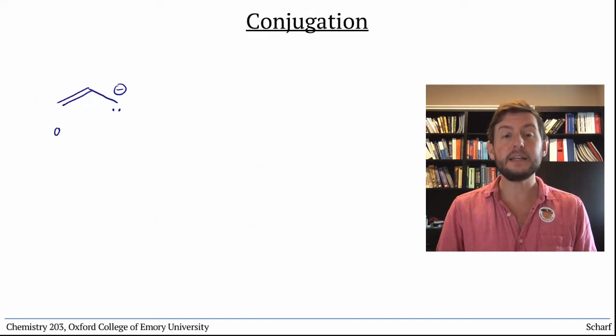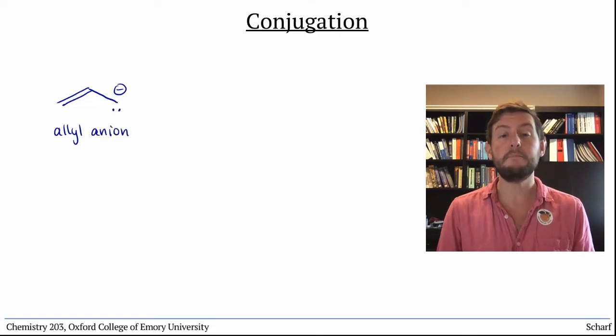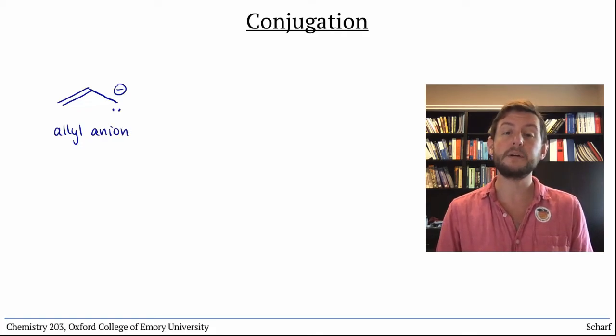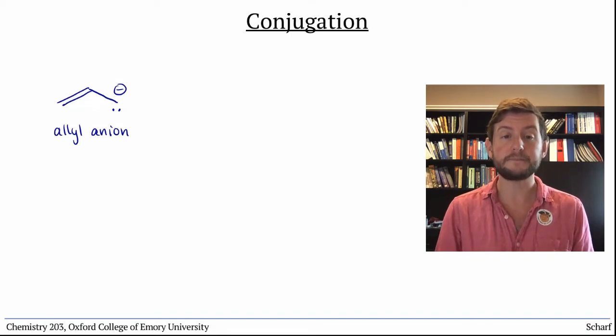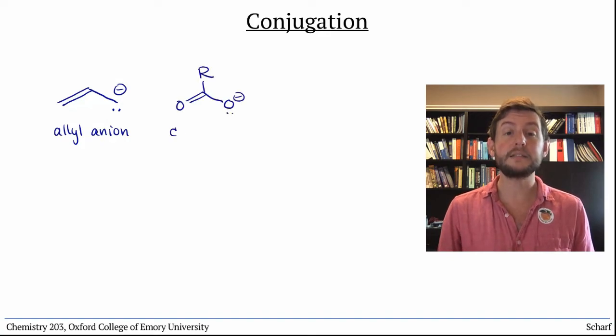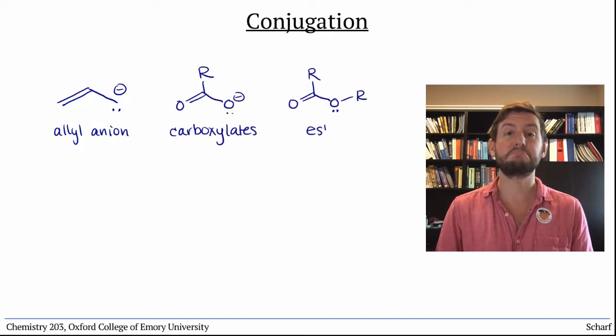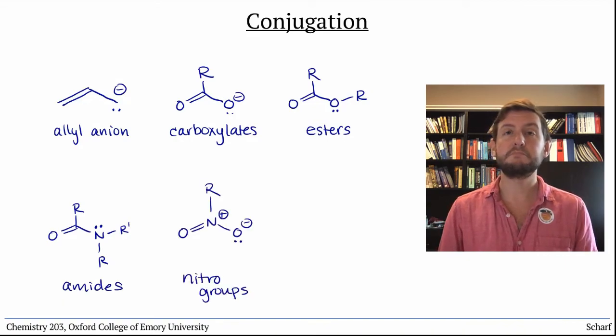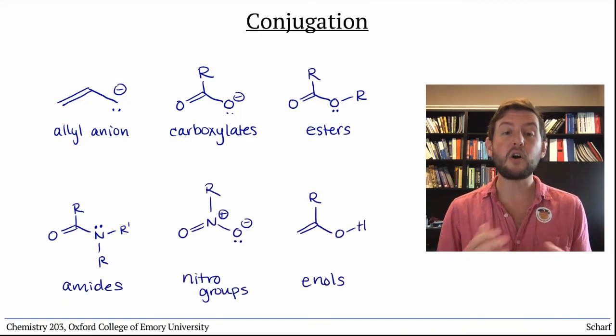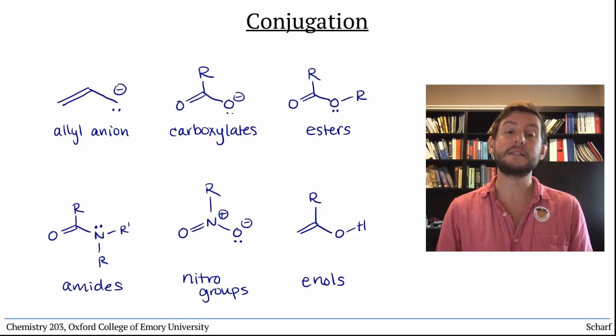The allyl anion is a model of many examples of three atom conjugated systems with a lone pair adjacent to a pi bond. Carboxylates, esters, amides, nitro groups, enols—these are all resonance stabilized systems with molecular orbital diagrams that look almost exactly like the MO diagram of the allyl anion. They are fully conjugated and flat.